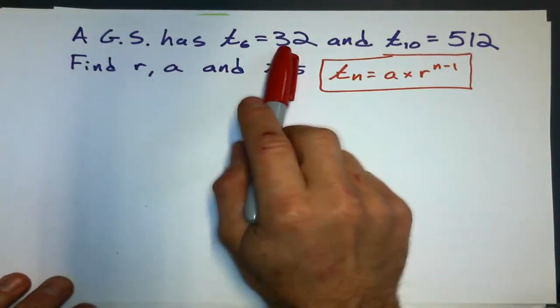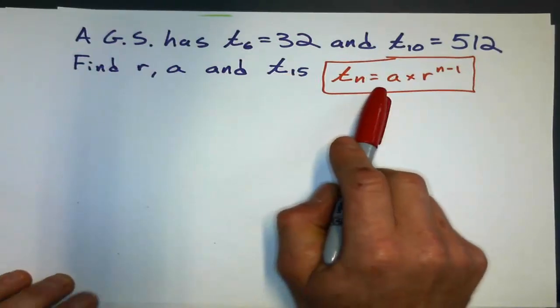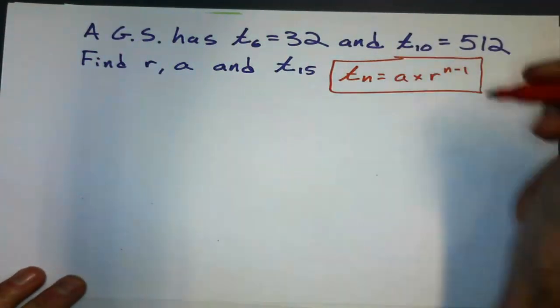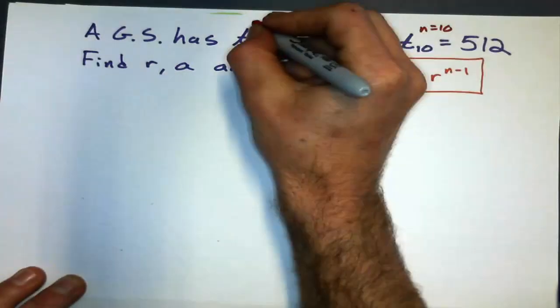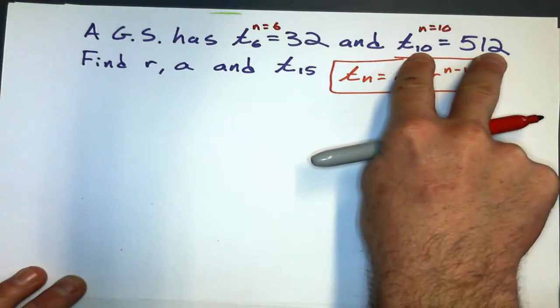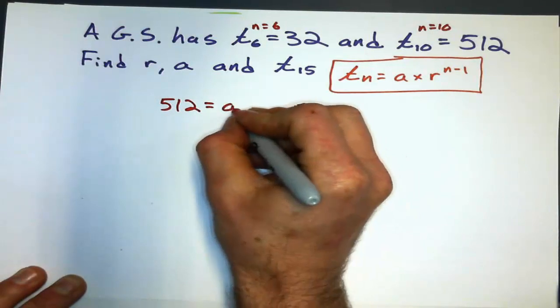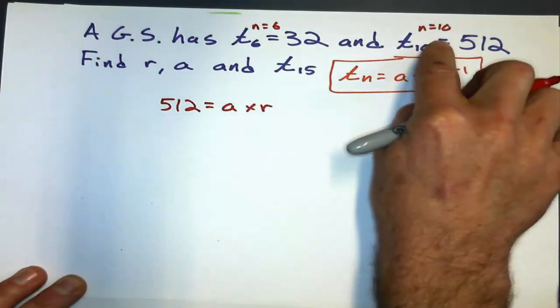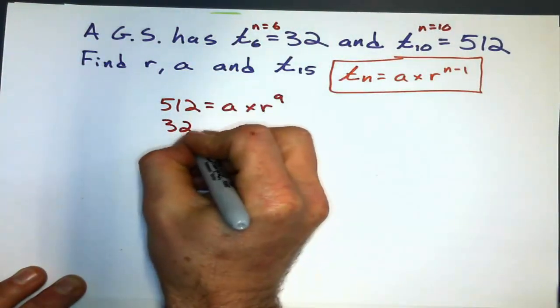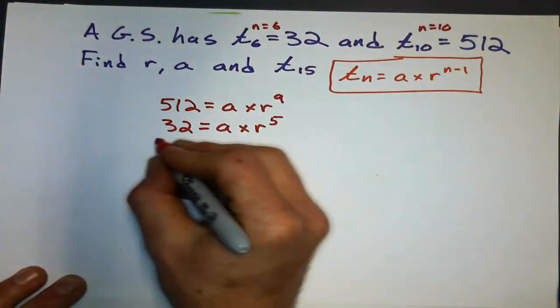And how does that look? So I say, geometric sequence has a sixth term of 32, a tenth term of 512. Find the ratio, first term, and the fifteenth term. Well, we're going to be using my general formula, regardless of whatever. So I'm going to substitute these guys in here. Remember, n equals 10 for this guy, and n equals 6 for this guy. Let's do the bigger one first. I'll do the bigger one on top. So I'll say, 512 equals a times my common ratio, and n minus 1 for that is 9. That's this one. Now this one. 32 equals a times r to the power of 5.